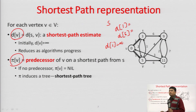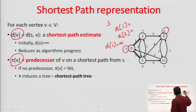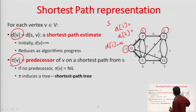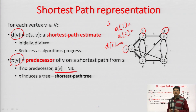The π(v) represents the predecessors. If I have to go from S to X in this graph, for vertex X the predecessor is T — meaning before going to X, I would have visited T. The predecessor for T is S, because before going to T, I had S first. So I have gone from S to T, and that is why vertex T has predecessor S. If the predecessor is nil, it means there is no path to that vertex.